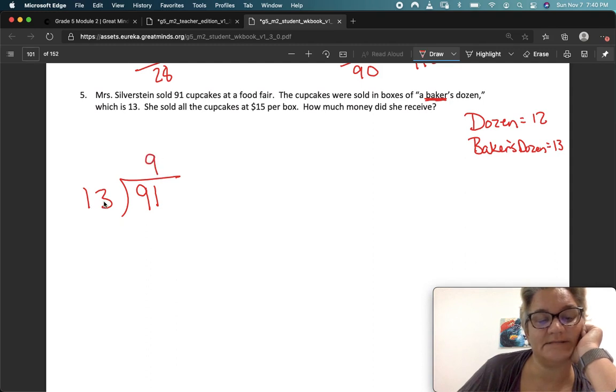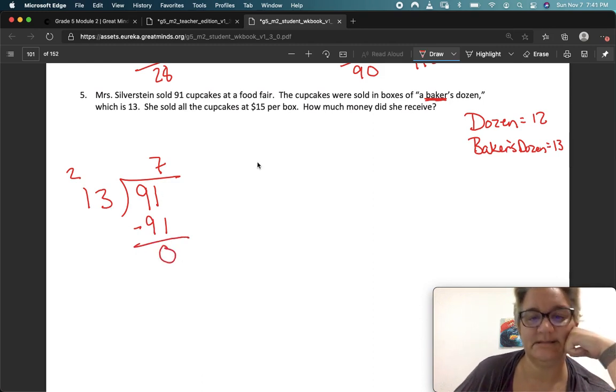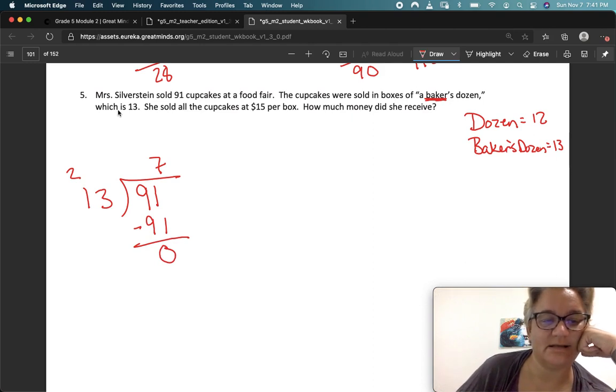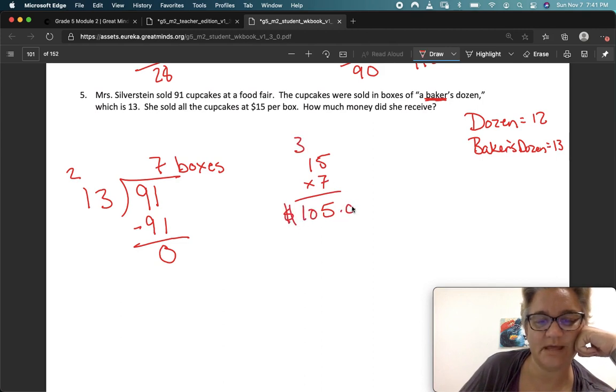9. Let's see. 9 times 3 is 27. Carry the 2. 9, 10, 11. Oh, that's way too big. We can't have this number be bigger than that. So let's try 6 or 7. 7 times 3 is 21. Carry the 2. 7 times 1 is 7, plus 2 is 9. Excellent. There we got it right. And our remainder is 0. So if cupcakes were sold in boxes of Baker's Dozens, which is 13, she sold all the cupcakes for $7 a box. So she sold 7 boxes. Now we want to multiply those 7 boxes by $15, which will be $105. How much money did she receive? She received $105.